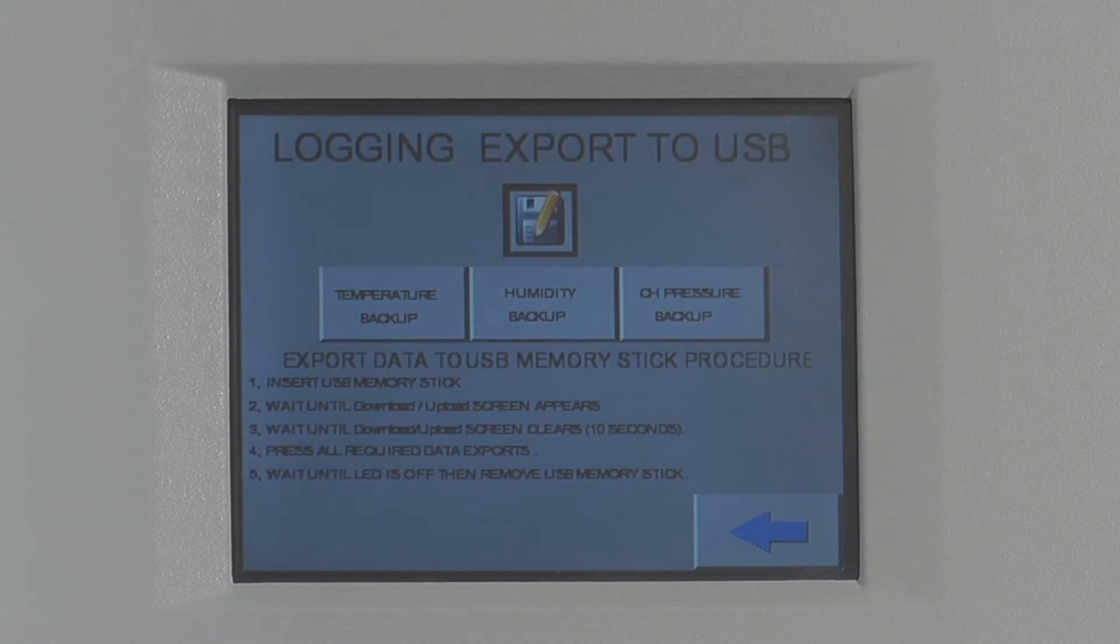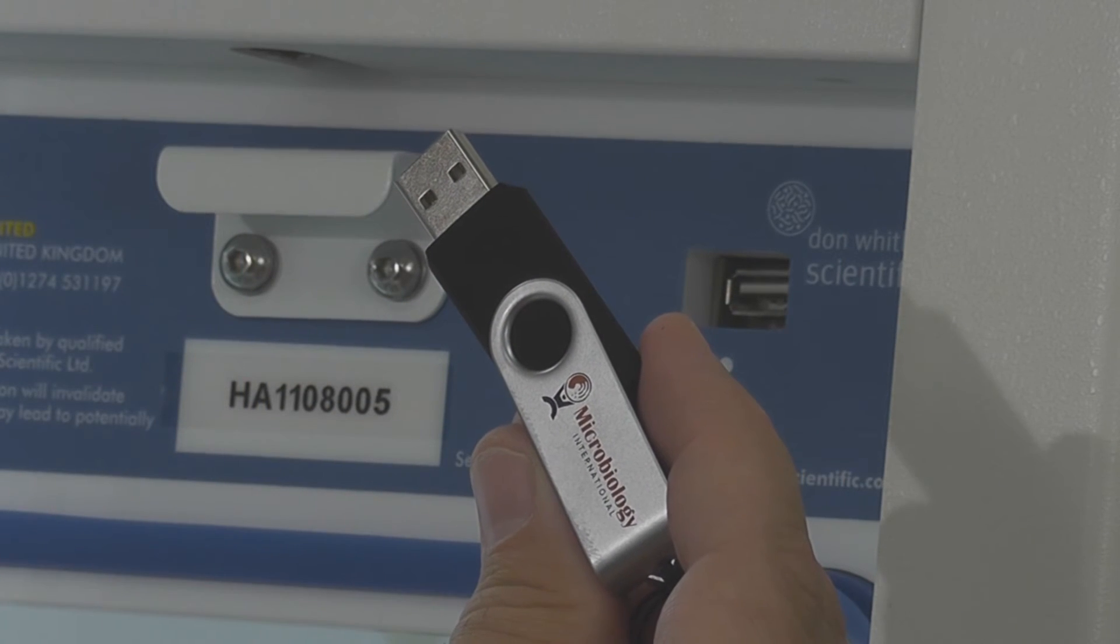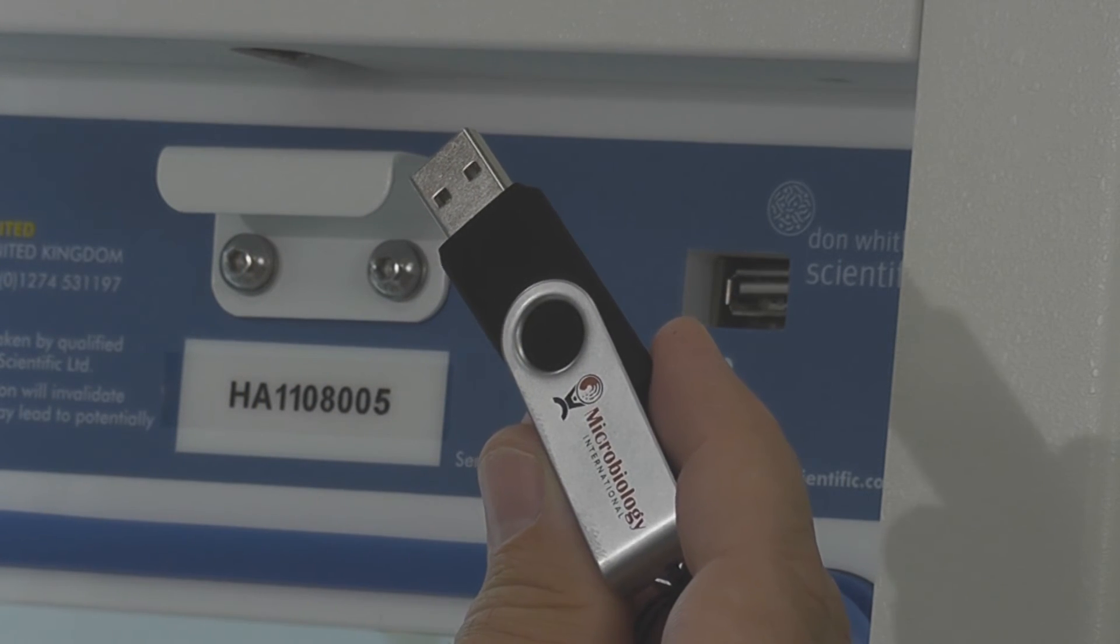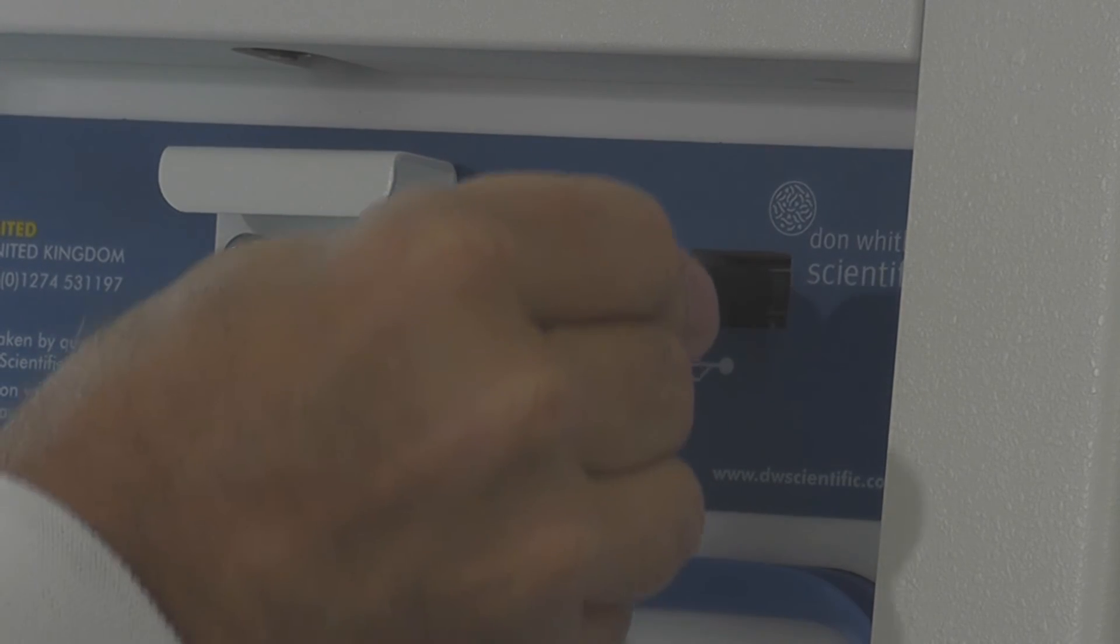You can easily download stored temperature, humidity, and internal pressure parameters over the last 30 days via any standard USB flash drive.